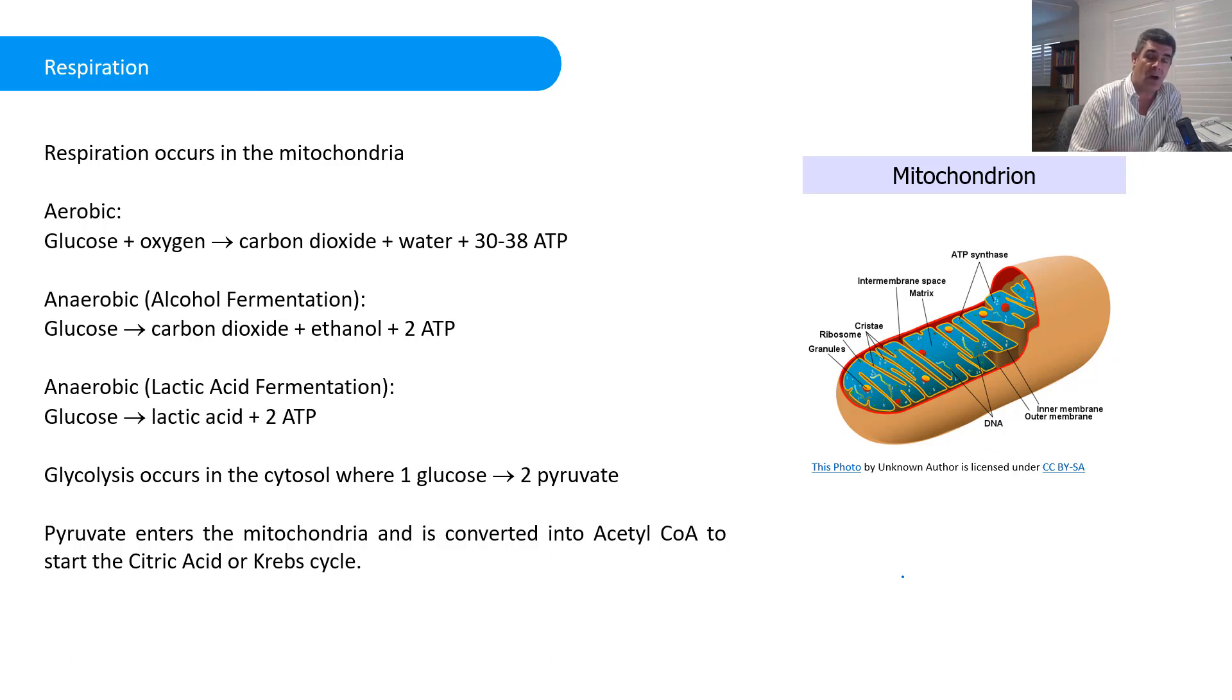Anaerobic, which is in the absence of oxygen, or aerobic. There are two main types of anaerobic respiration. Alcohol fermentation, which is carried out by yeasts and is used in the alcohol industry. When the glucose is broken down in the absence of oxygen, we get carbon dioxide being produced, but we also get ethanol.